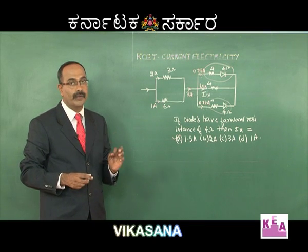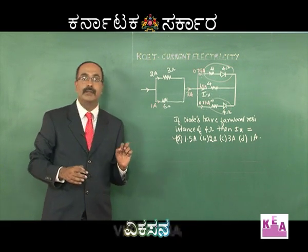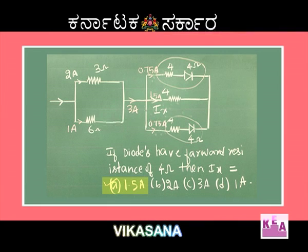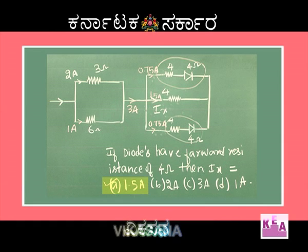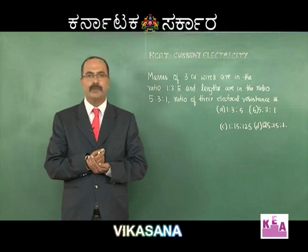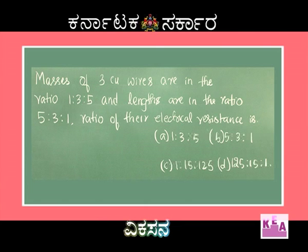I hope students you have understood this. The logic is very simple: the ratio of resistances is inversely proportional to the ratio of currents. Now let us discuss the next problem. Masses of 3 copper wires are in the ratio 1:3:5 and their lengths are in the ratio 5:3:1. The ratio of their electrical resistance is: option A 1:3:5, option B 5:3:1, option C 1:15:125, option D 125:15:1.